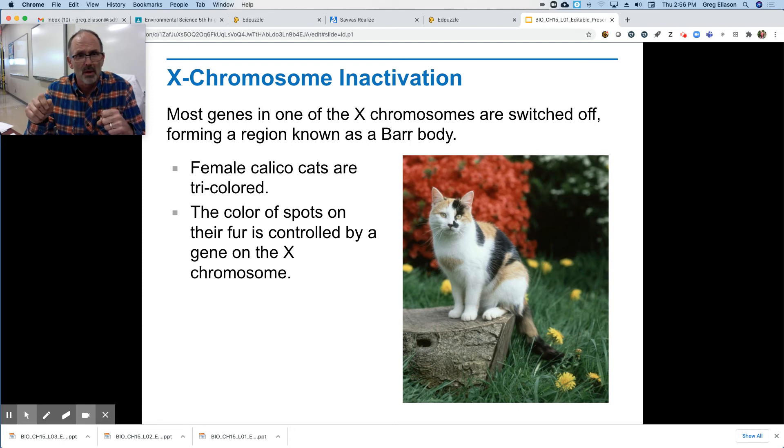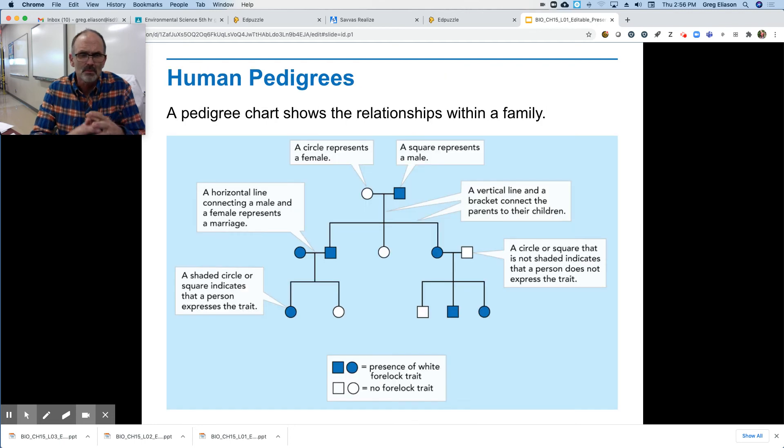So female calico cats are tricolored, and the color of the spots on their fur is controlled by the X chromosome.